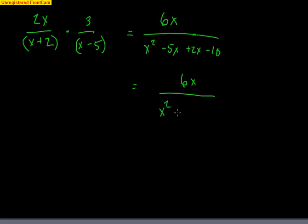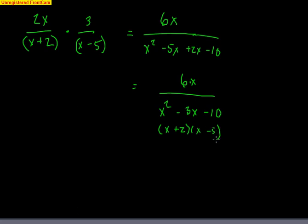The only way something can cancel is if it's the exact same factor. On top, my factors are 6 times x. But if I go back to here — really this is (x plus 2) times (x minus 5) — those are my factors. There's nothing common that I can cancel out, so this right here is probably going to be my final answer, because I don't have anything I could factor out.